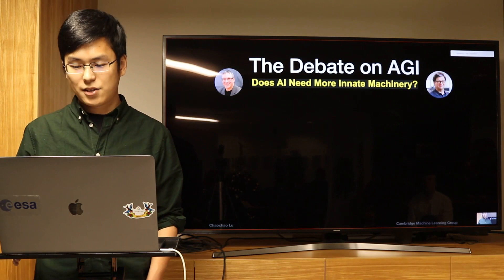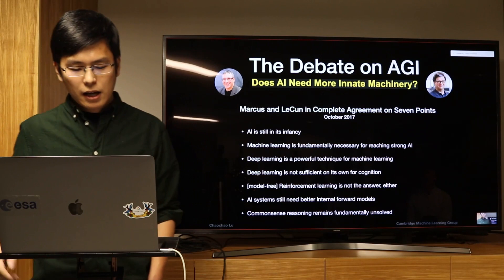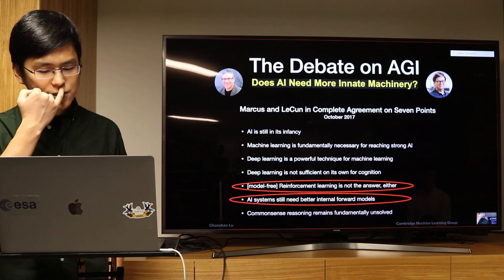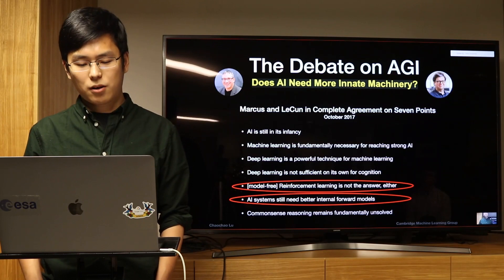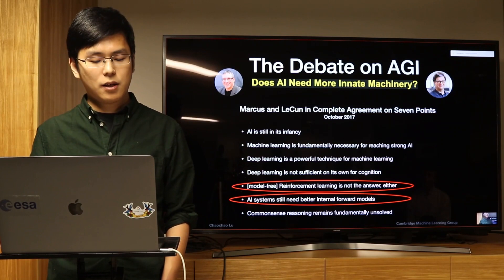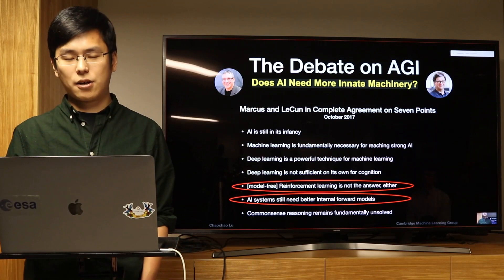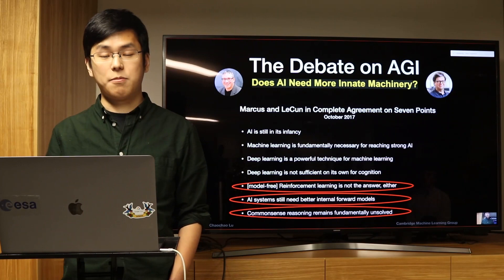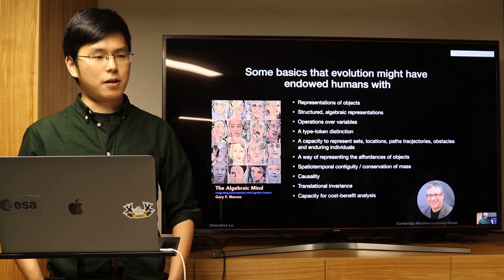Marcus and LeCun have a famous debate on AGI — they disagree on many aspects but agree on several points. One: model-free reinforcement learning is not the answer yet. Two: AI systems need better internal forward models — in machine learning, causal models are the closest to physical models, since most ML models are statistics-based and struggle to model accurate relations between data.